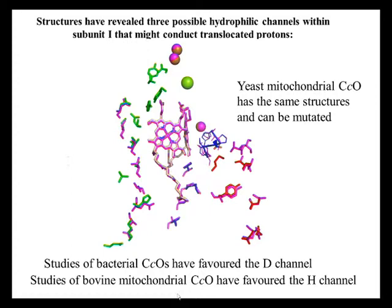The peculiarity is that studies of bacterial oxidases have very much favoured the D channel, shown here in red, as the structure that conducts protons through this enzyme. Whereas studies on the mitochondrial form of cytochrome oxidase, notably bovine cytochrome oxidase — for which there's a crystal structure — have favoured the H channel doing this function. We would really like to know the answer to this because we're very interested in the biophysics of how protons are moved through such structures linked to the chemistry of oxygen reduction.